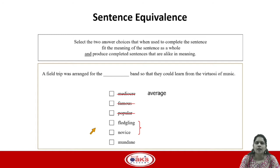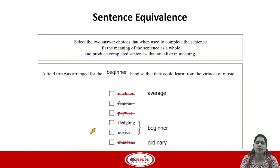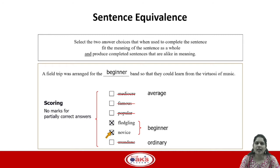The next two words are fledgling and novice. Fledgling and novice do mean beginner, which matches our anticipated answer, so these are two options to keep. The last option is mundane, which means ordinary — we can eliminate this because it doesn't match our anticipated answer and has no pair. So what we are left with is fledgling and novice as our final answers. An important thing to keep in mind: there are no marks for partially correct answers, so you have to get both options right to get a point.